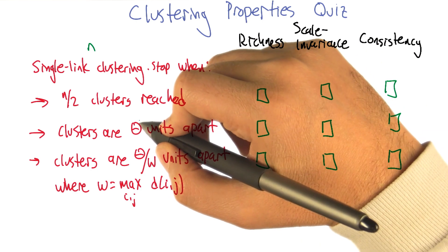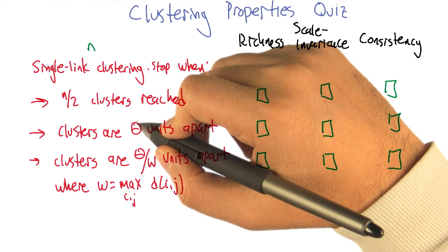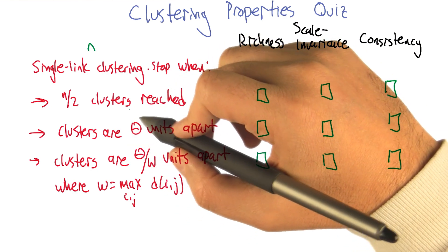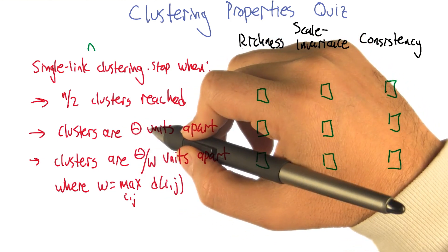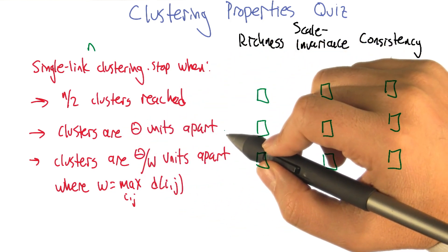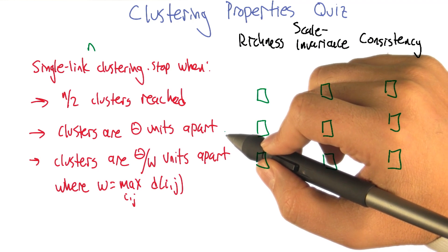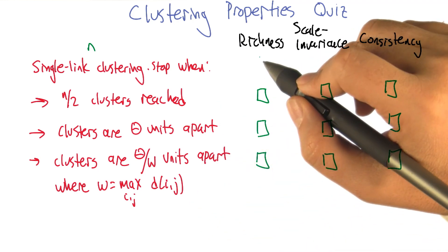The second one is, we're going to have some parameter theta, and we're going to keep merging clusters until we'd have to merge clusters that are theta units apart. And once they're theta units apart, we're going to say, nope, that's too far to be part of the same cluster, we're done.